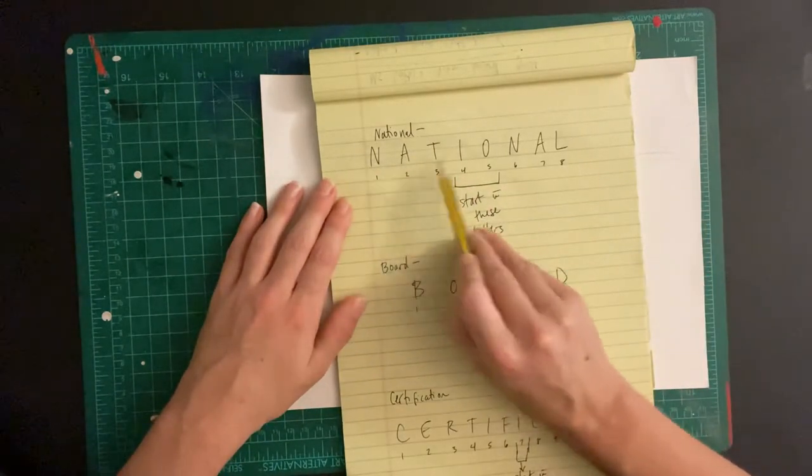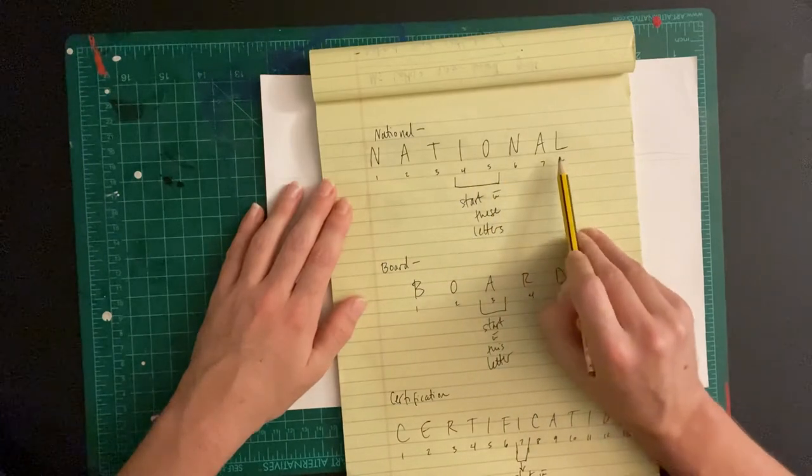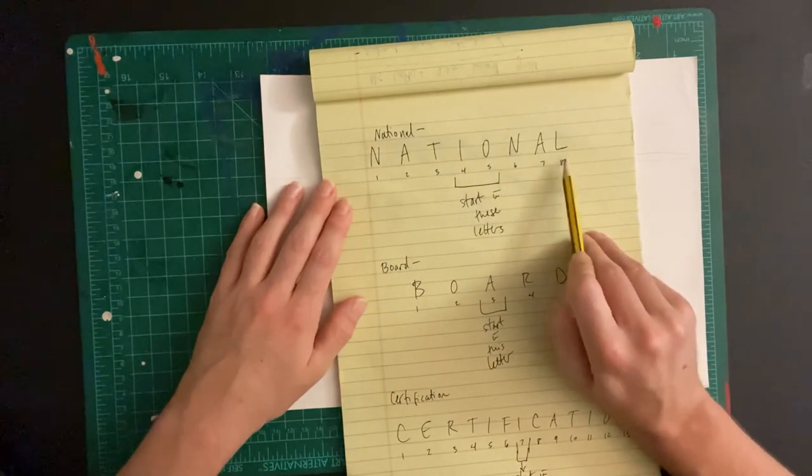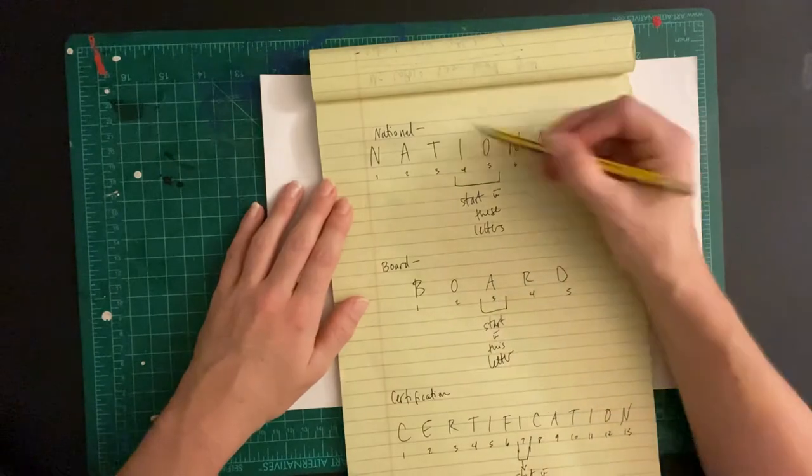So national has one, two, three, four, five, six, seven, eight letters. I count the letters. And what I do is I start with the ones in the middle. So for a word that has an even number of letters, I'll start with the center two.